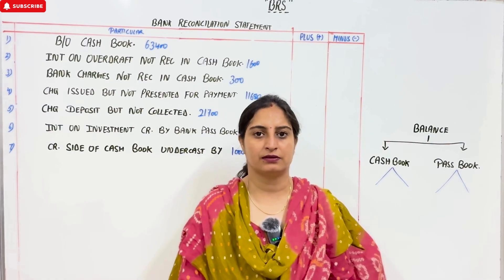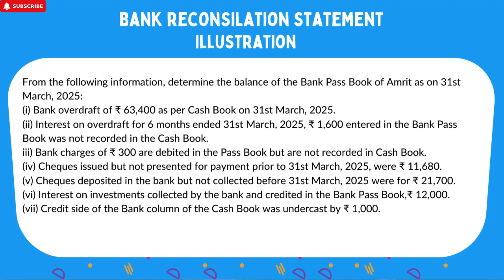I will read the question on the screen. Following balances of bank pass book of Amrit as on 31st March. Bank overdraft is given as per cash book. Next is interest on overdraft for 6 months ended 31st March 2025 — 1600 — entered in the bank pass book but not recorded in the cash book. Bank charges 300 debited in pass book but not recorded in cash book. Check issued but not presented for payment as on 31st March were 11,680. Check deposited but not collected by the bank. Interest on investment collected by bank and credited in bank pass book. Credit side of the bank column of the cash book undercast by 1000.